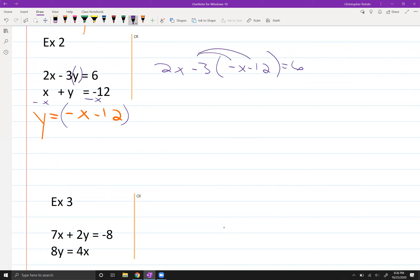So in place of y, I've now put in negative x minus 12, because we subtracted x to the other side. So I'm going to distribute. I'll be very careful here. 2x, this is negative negative. So it's plus 3x. This is negative negative. So it's plus, and 3 times 12 would be 36. So I get 5x. Let's get rid of that 36 while we're doing this step. So 5x turns out to be negative 30. And we'll divide by 5. So x turns out to be negative 6.